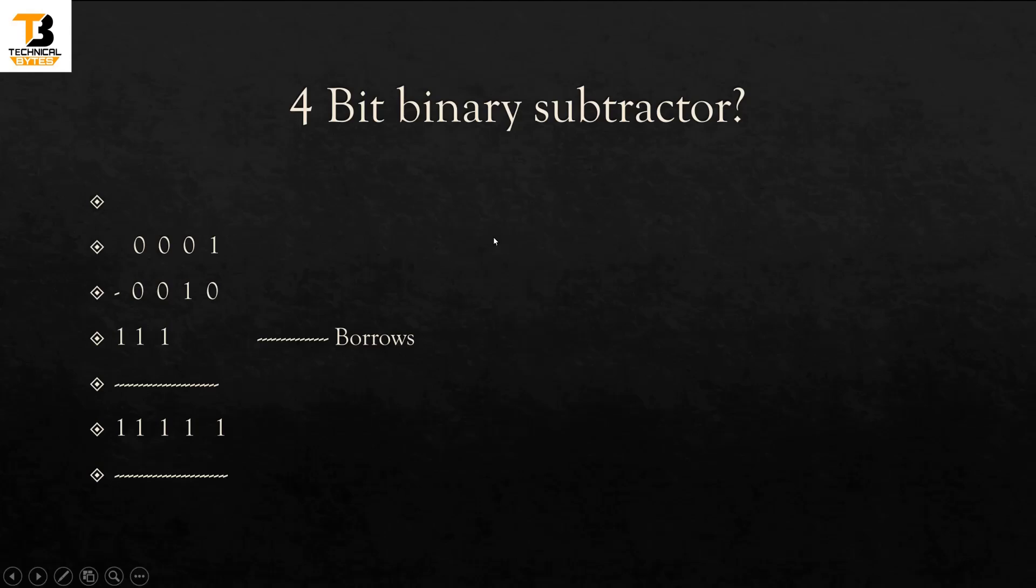Friends, now I am considering a second example. Here the first number is 0001 and the second number is 0010. The second number is greater than the first number. So 1 minus 0 is 1, which is correct and we all know.